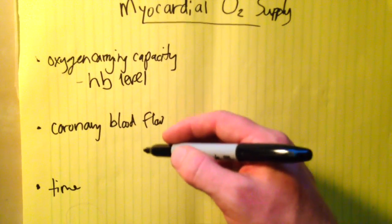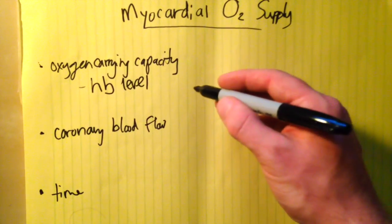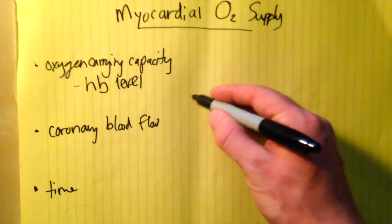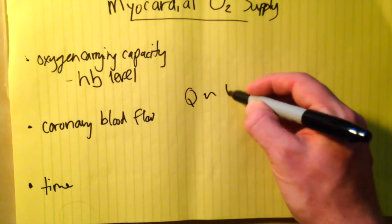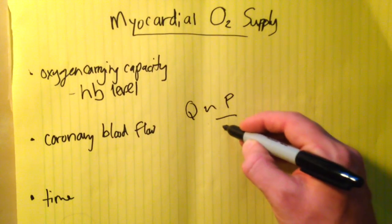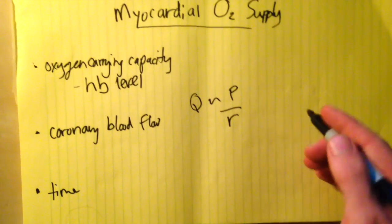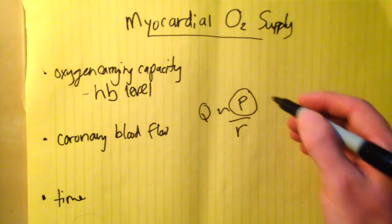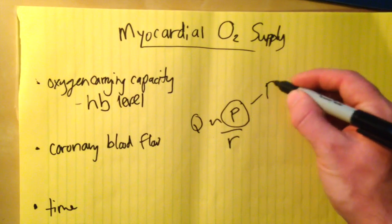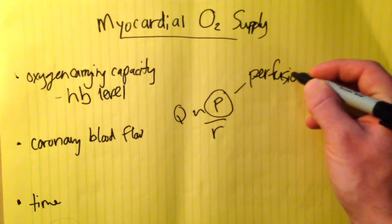A bit more complicated is coronary blood flow. We know that flow is proportional to pressure and inversely proportional to resistance. So what is our coronary perfusion pressure?